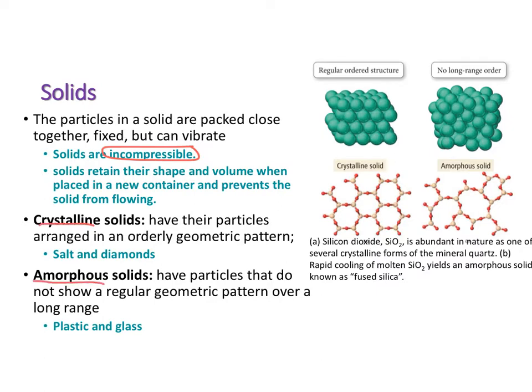Crystalline solids have a very ordered arrangement; some examples are salt and diamonds. Amorphous solids do not have a pattern over a long range; some examples are plastic and glass. You can see what we mean by a regularly ordered structure in a crystalline solid versus an amorphous solid, which is not structured.